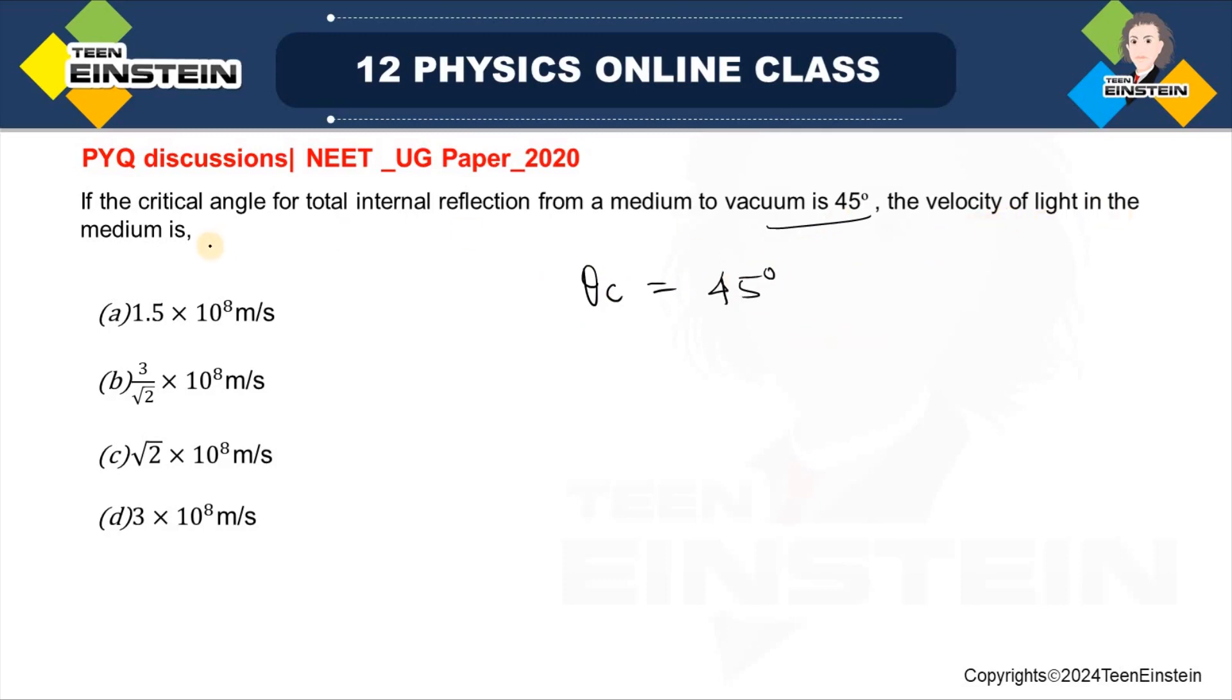The velocity of light in that medium. So we know refractive index, if we can find out from this particular information, then mu, refractive index is equal to C by V. We know the speed of light, then V can be found out from here C by mu. So this is the thing we have to do here.